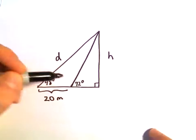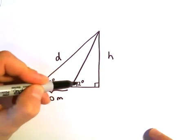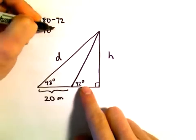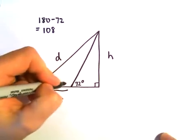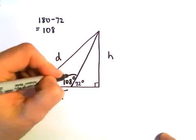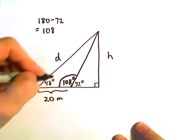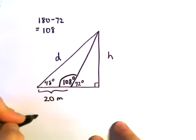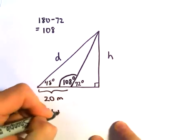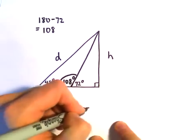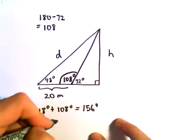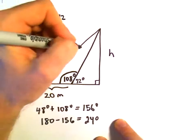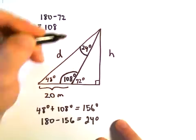Notice this angle is 72 degrees. We know that the angles along a line add up to 180. So if we just take 180 and subtract away 72, that'll leave us with 108 degrees. So I know this angle will be 108 degrees. If you think about the triangle on the left, we know the angles inside of a triangle add up to 180. So if we take 48 degrees plus 108 degrees, that's going to give us 156 degrees. And if we take 180 and subtract away 156, that's going to leave us with 24 degrees. So I know that this angle up here would simply be 24 degrees.